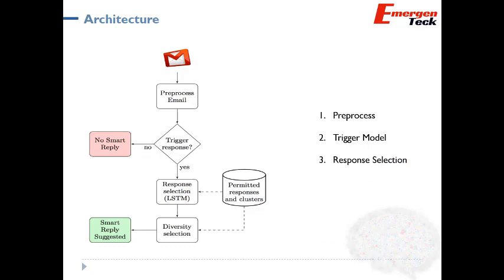Step three is LSTM — Long Short-Term Memory — a deep learning model frequently used in RNN models. The LSTM model creates the vectors and generates the best possible responses. The response selection and generation process consumes the email, generates vectors, understands the intent, and then generates the response. Finally, the diversified selection method — again an RNN model — selects diversified, semantically short responses that make more sense to the user. This is how the entire architecture works.